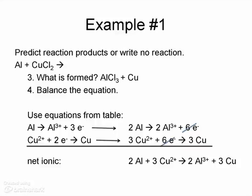So let's do step four. In step four, we want to balance the equation. If we use the equations from the table that we just saw, we know that aluminum, when it gets ionized, forms aluminum 3+ and three electrons. So that's directly from the table.